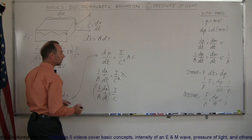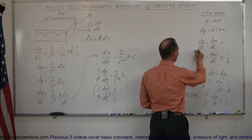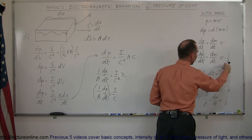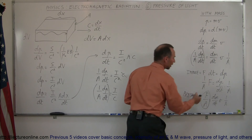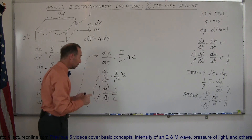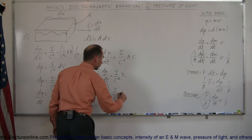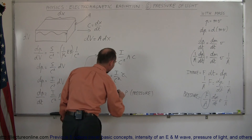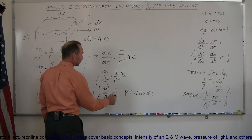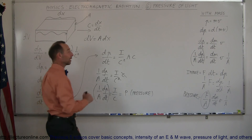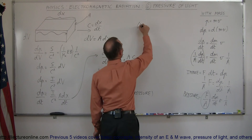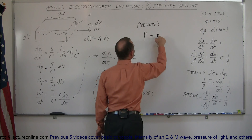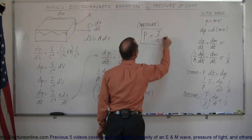Now remember, this looks very familiar. If we go back to our earlier result, we can say that 1 over A times dp/dt equals the change in mass per unit time times velocity times 1 over A, which we determined was equal to force per unit area — the units of pressure. Which means that this equals the pressure of the electromagnetic radiation. So this shows that the pressure of electromagnetic radiation can be found by simply saying it's the intensity of the light divided by the speed of light.